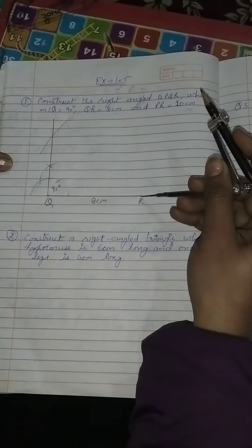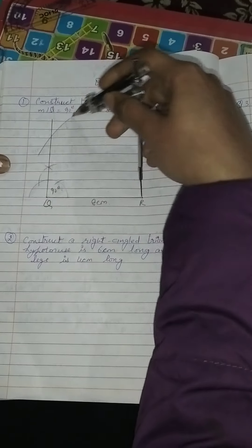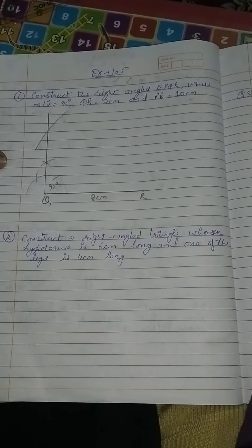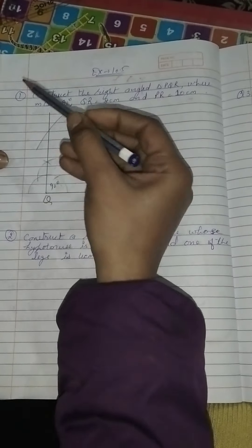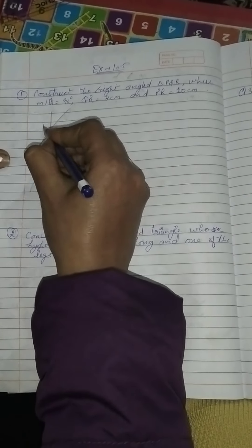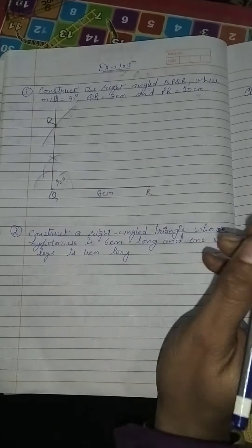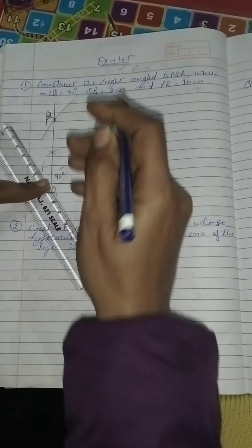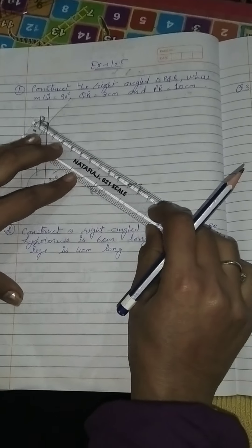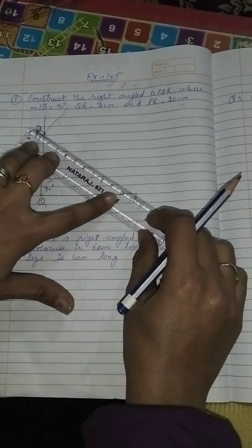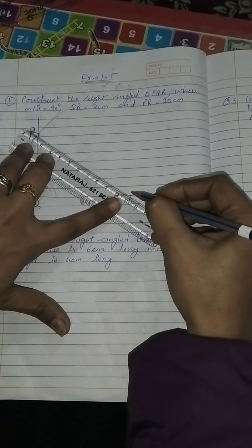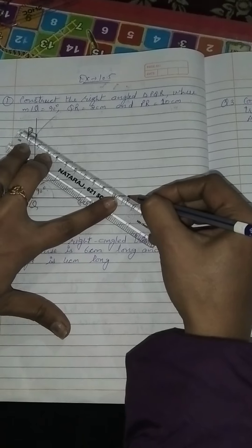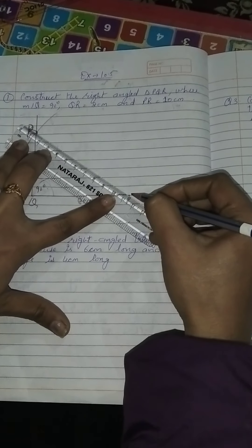Place the compass here and it will cut on the 90 degree line in this manner. The cutting point you get — that point is P. Now join P and R.